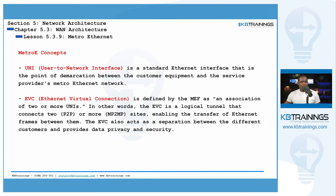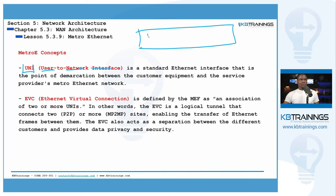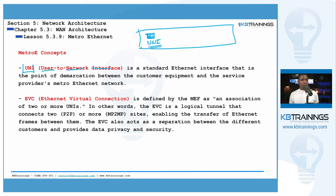Next, let's cover two key concepts. First is UNI, or User to Network Interface. This is the interface provided by the service provider where you connect your device — specifically the port on the Metro E switch designated for your connection. The UNI is the demarcation point between the customer's network and the service provider's network, and there may be more than one customer on a single UNI depending on how the network is deployed.